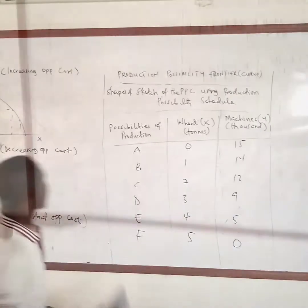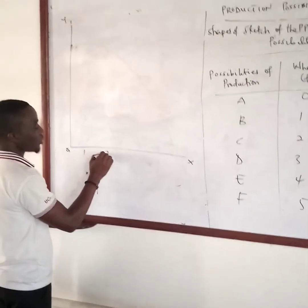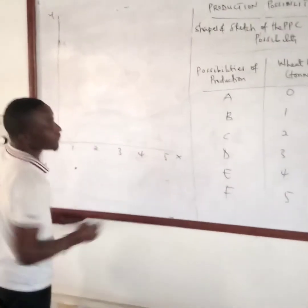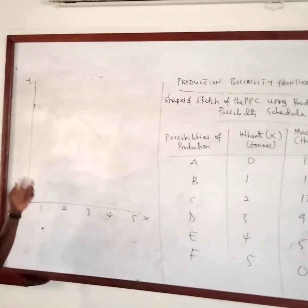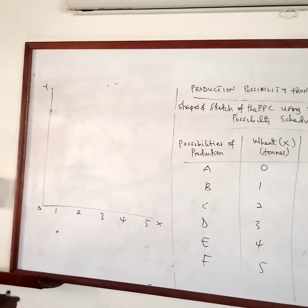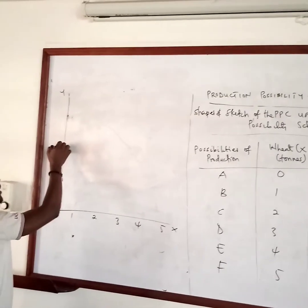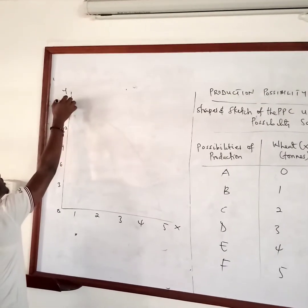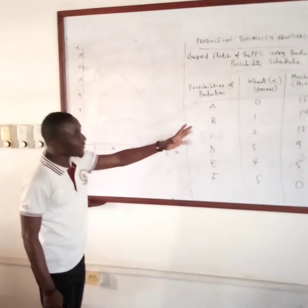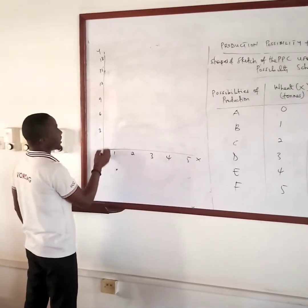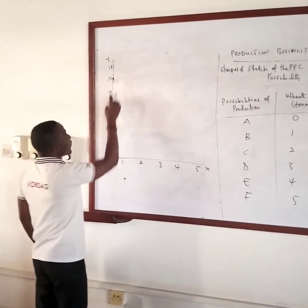Now let's draw the PPF. On my x-axis I have zero, one, two, three, four, five. For the y-axis, values go up to fifteen, so I'll scale by three units: three, six, nine, twelve, fifteen, and so on. From the schedule, the first point is zero and fifteen, which I'll plot here.